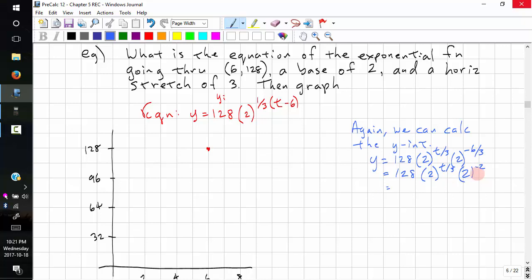We move this up front. This is actually just dividing by 4. So 128 divided by 4, 2 to the power of t over 3. And we get 32, 2 to the power of t over 3. So the y-intercept is 32. And it's also our y-naught at t0.